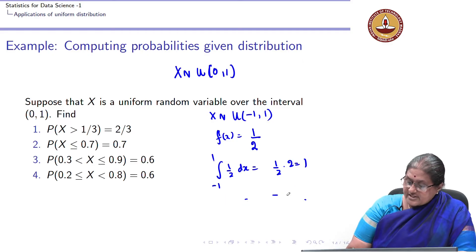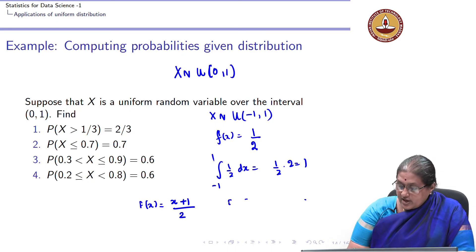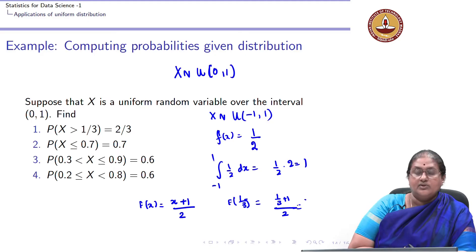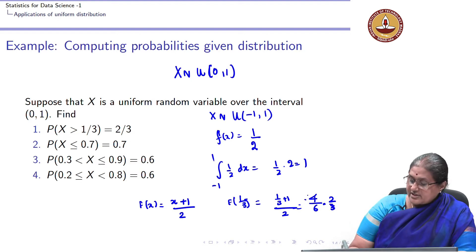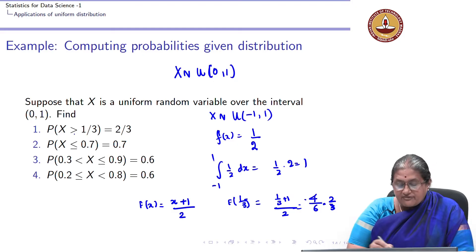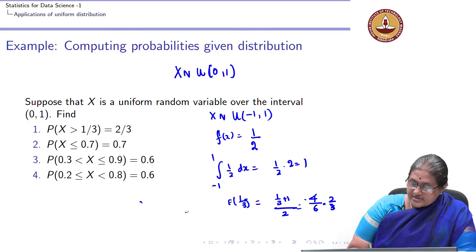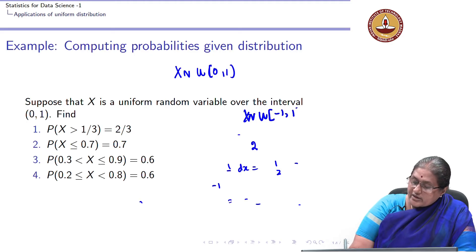For X uniform(-1,1), the CDF is F(x) = (x + 1)/2. So F(1/3) = (1/3 + 1)/2 = (4/3)/2 = 2/3, and probability X greater than 1/3 = 1 - 2/3 = 1/3. The other problems are left as an exercise for X uniform(-1,1).